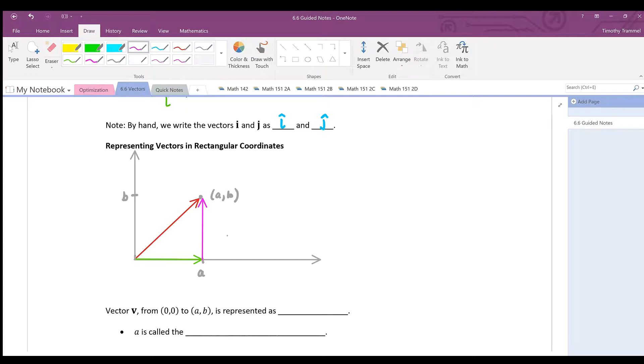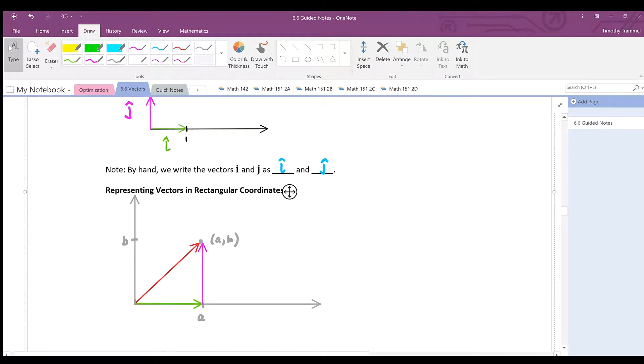It ends up that these two vectors have really simple representations if we're thinking about i and j. In fact, i is just the vector of length one that points in the direction of the positive x-axis. We would like a vector that points in the direction of the positive x-axis but to be of length a, which is equivalent to a times the vector i. This purple one here should just be b times the vector j.